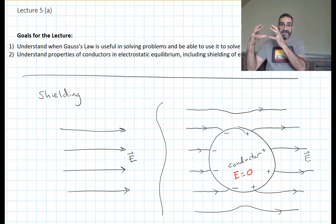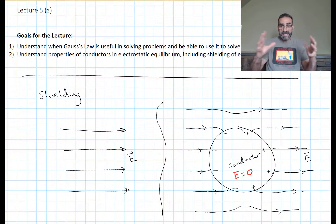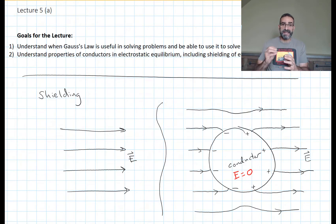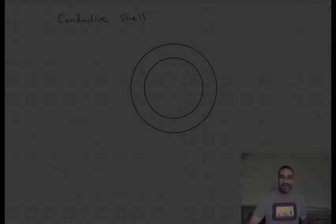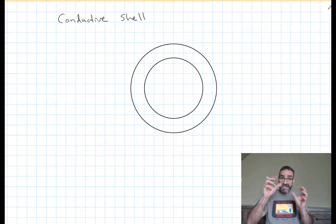When we take this conductive sphere and set it into the external electric field, for a short period of time there is an electric field inside of that conductive sphere as the charges are moving and separating. Then eventually they stop moving and we're in electrostatic equilibrium. That's when we know the electric field in the conductor is zero, because if it wasn't, charges would still be moving. And this is true even if our conductor isn't solid — it's true even if it's just a conductive shell with a hole or a cavity in the middle.